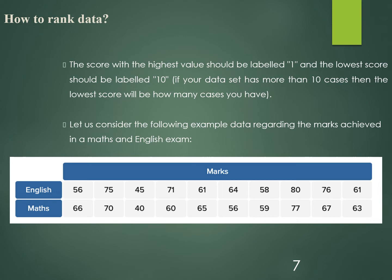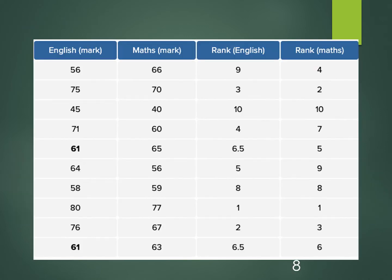Ranking the data is an important step in the Spearman correlation test. Shown below is a table of marks obtained by students in English and Mathematics. We rank by labeling the highest score as rank 1 and the lowest score as rank 10 (or as per your data size). In this table, ranking has been done individually for marks in English and Maths, with rank 1 given to the highest score — 80 in English and 77 in Mathematics.